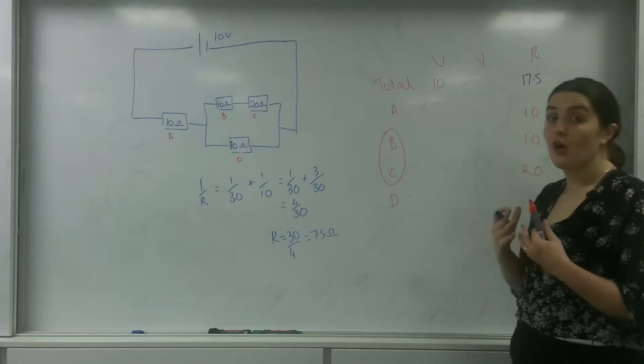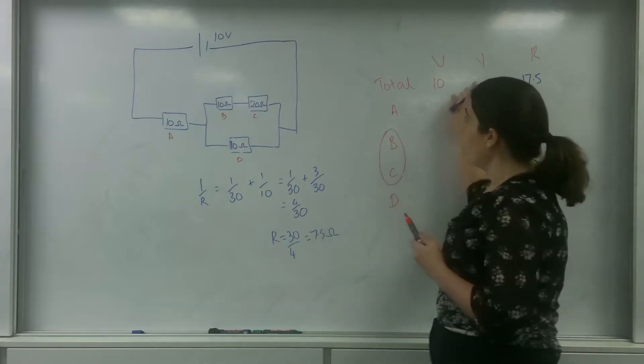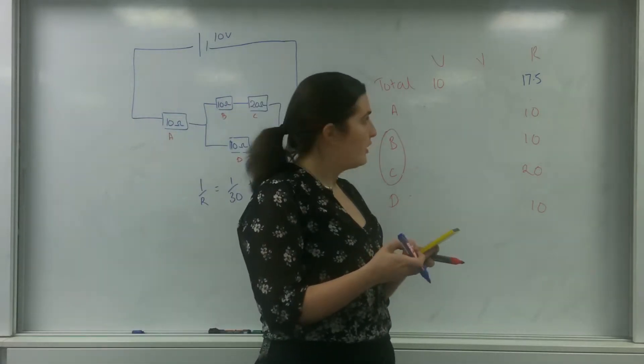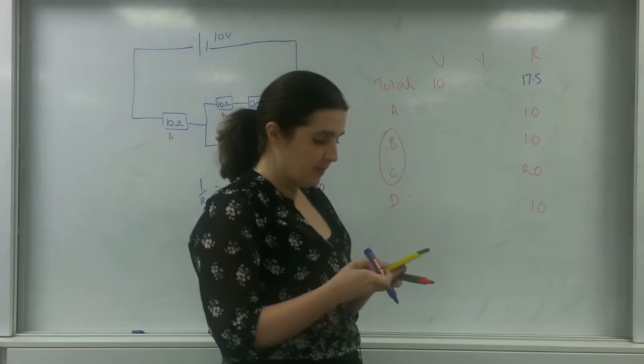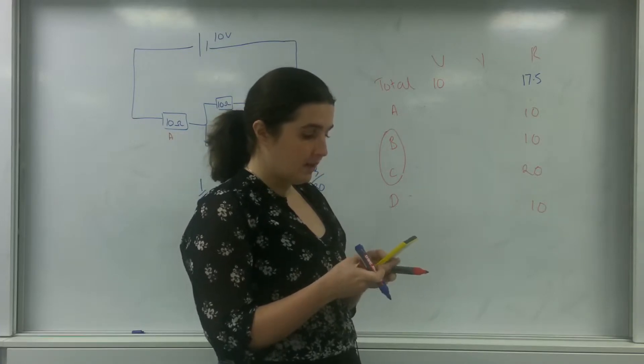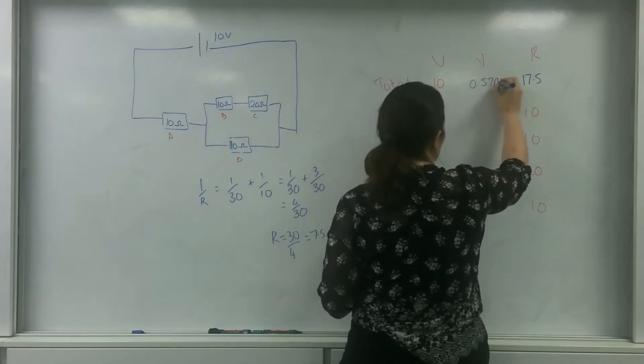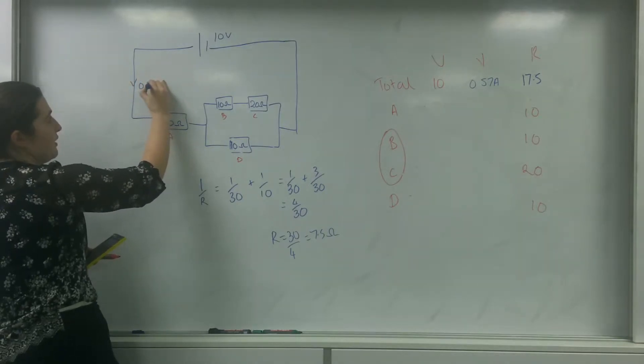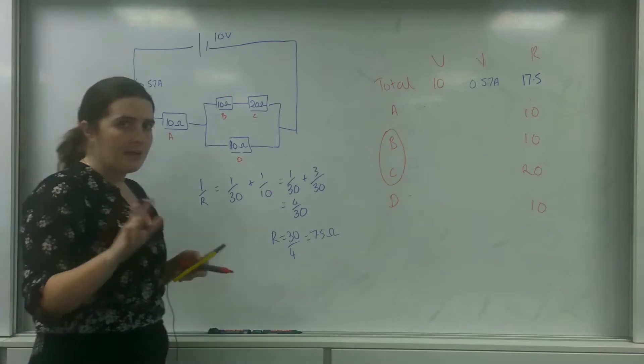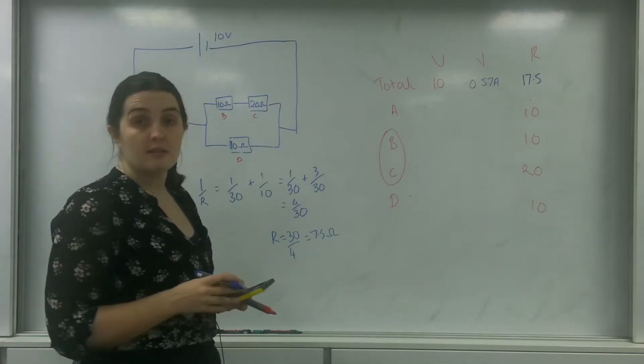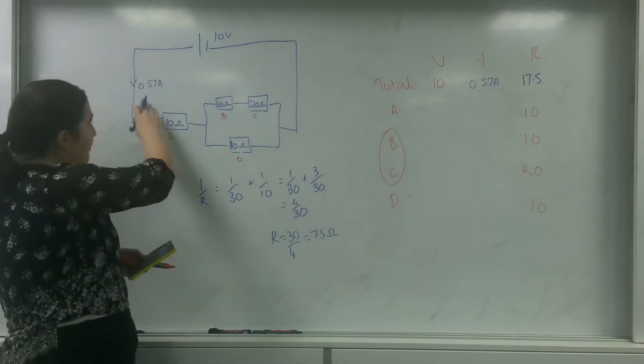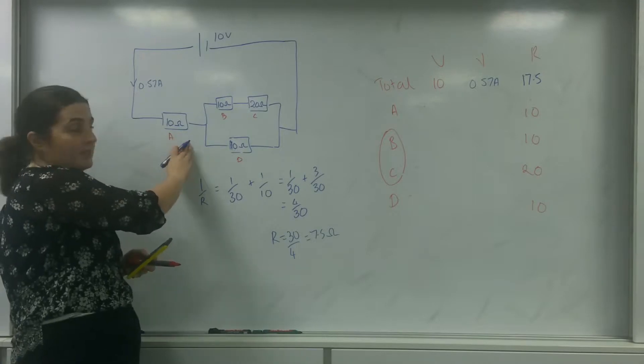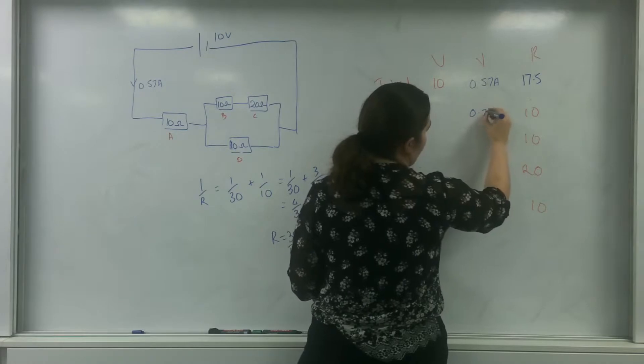This means I can use Ohm's law, V equals IR, to be able to find my total current. So 10V divided by 17.5 is 0.57 amps. So this here is 0.57 amps. And please don't feel afraid about labeling your diagrams. You're more than welcome to label your circuits. Now, 0.57 only splits up after this resistor here, so this resistor here must have 0.57 amps going through it.